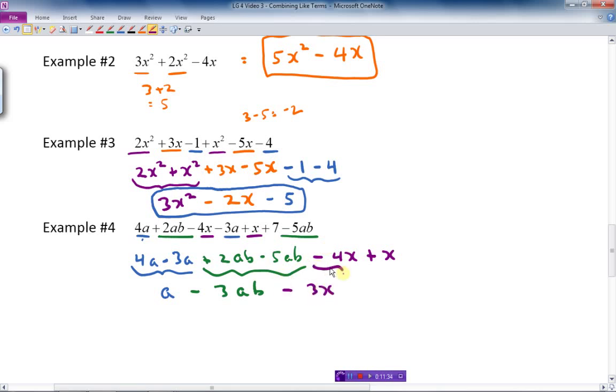And lastly, I have this 7 here, which there's no other like terms. So I just put a plus 7 at the end. That's a plus 7. And there is my final answer. I've reduced it to 4 terms. 1, 2, 3, 4, 5, 6, 7 terms down to 4 terms. And that's all I'm doing in this lesson is reducing it or simplifying each expression by adding or subtracting the like terms.